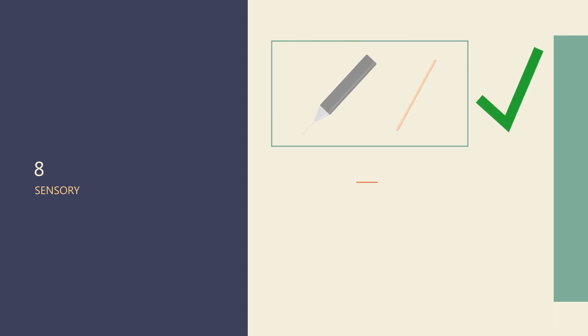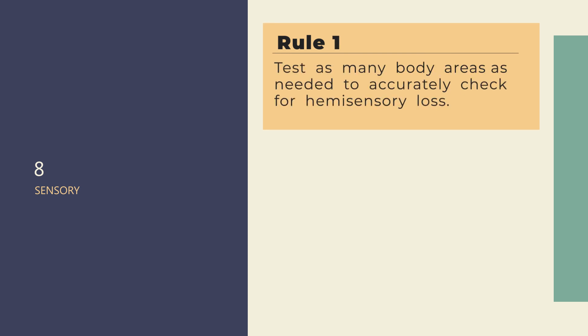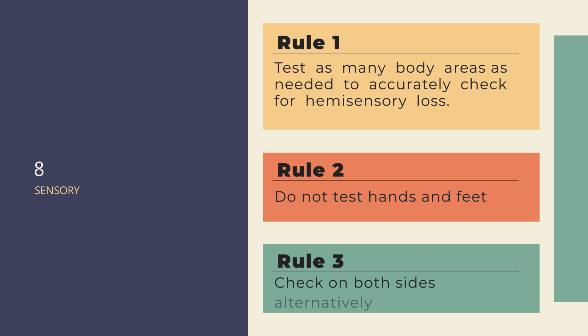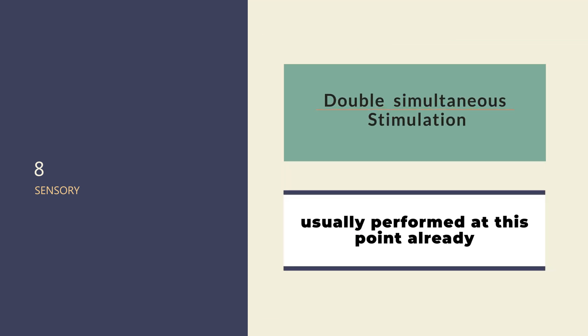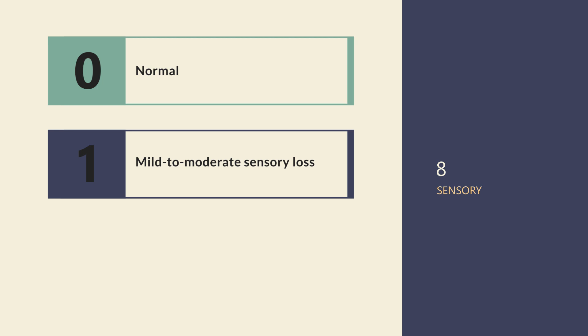Test item 8, Sensory, assesses sensory perception. Testing is done on the face, trunk, and limbs with tools regularly used to assess pinprick perception. Do not use other objects such as paper clips, pens, or broken sticks. The examiner should test as many body areas as needed to accurately check for hemi-sensory loss. Hands and feet are not included in testing to ensure that a possible polyneuropathy does not interfere with the result. Check on both sides alternating, and ask for differences between both sides. Double simultaneous sensory testing is usually performed during this item but is scored on test item 11. Score 0 when there is no evidence for sensory loss. Score 1 for mild to moderate sensory loss if the patient feels pinprick is less sharp or dull on the affected side, or there is a loss of superficial pain but the patient is aware of being touched.